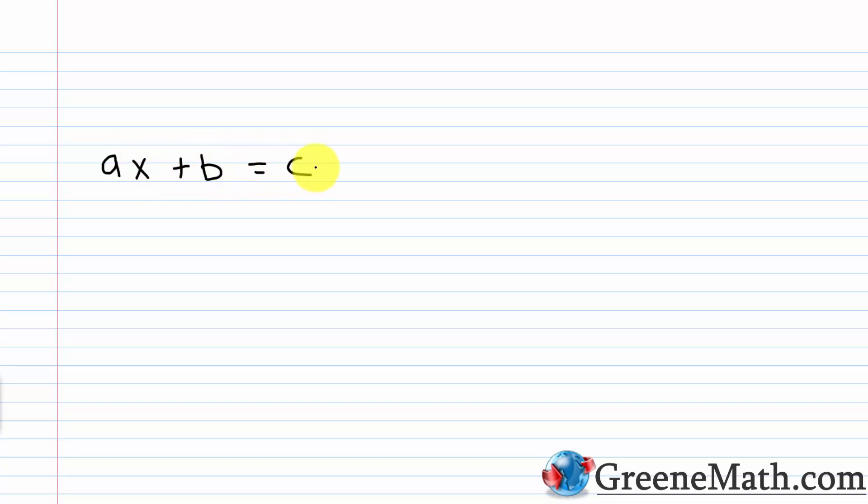In the last lesson, we finally started talking about how to solve an equation. We started talking about the first type of equations that we look at, and those are linear equations in one variable. So let me kind of redefine that for you. A linear equation in one variable looks like this: ax plus b equals c. Your variable doesn't have to be x, but that's the most commonly used in Algebra.